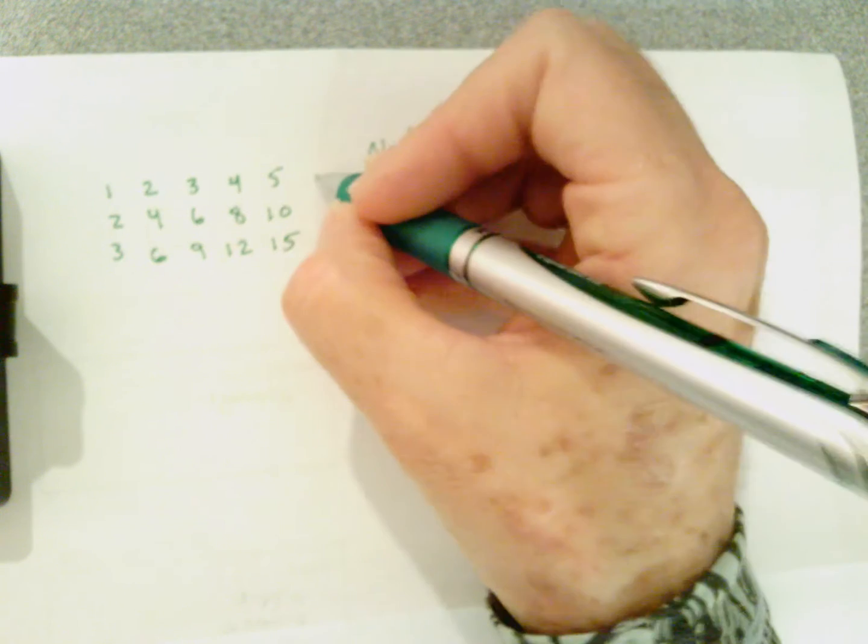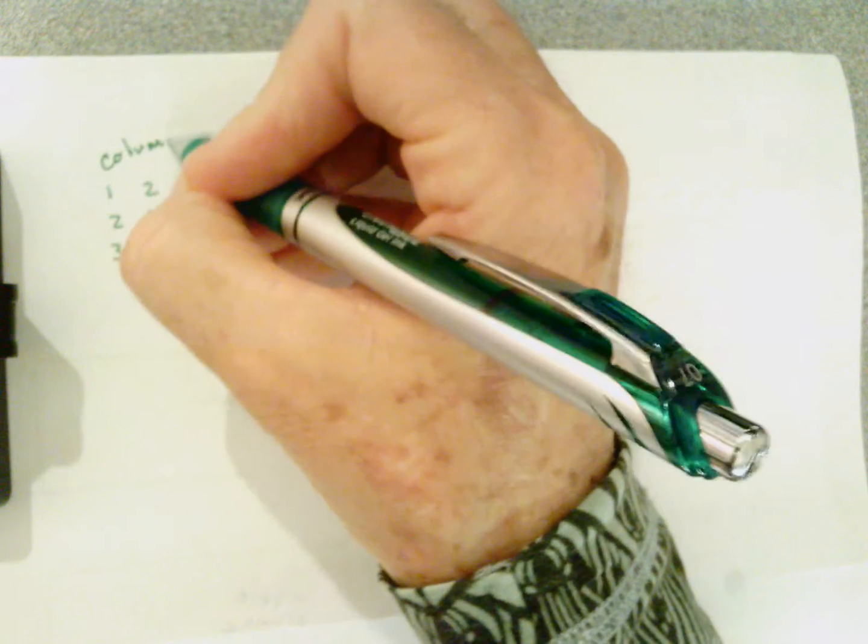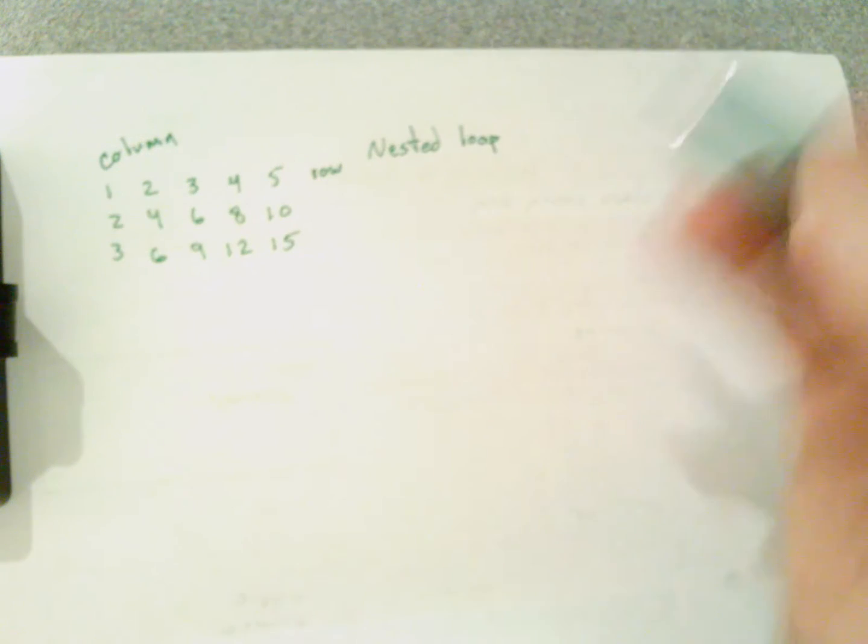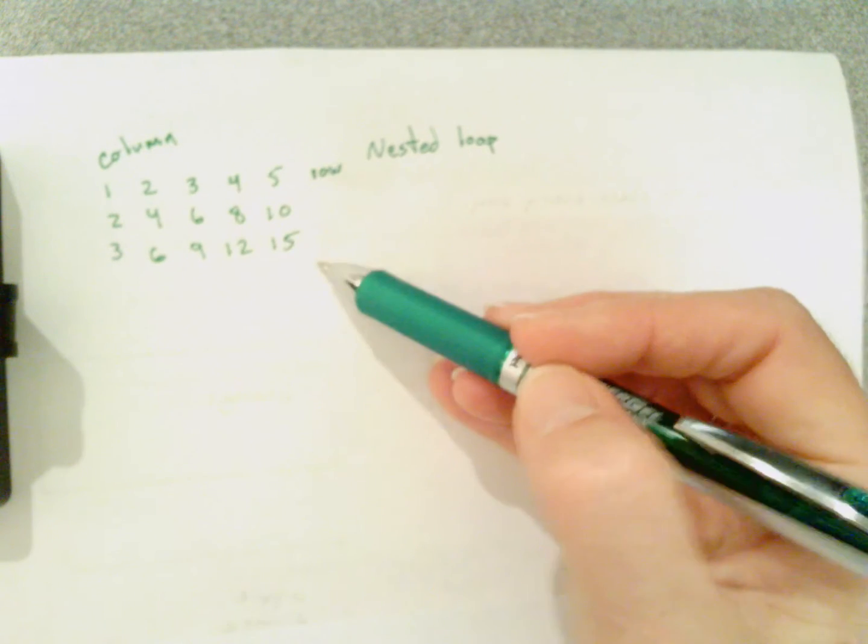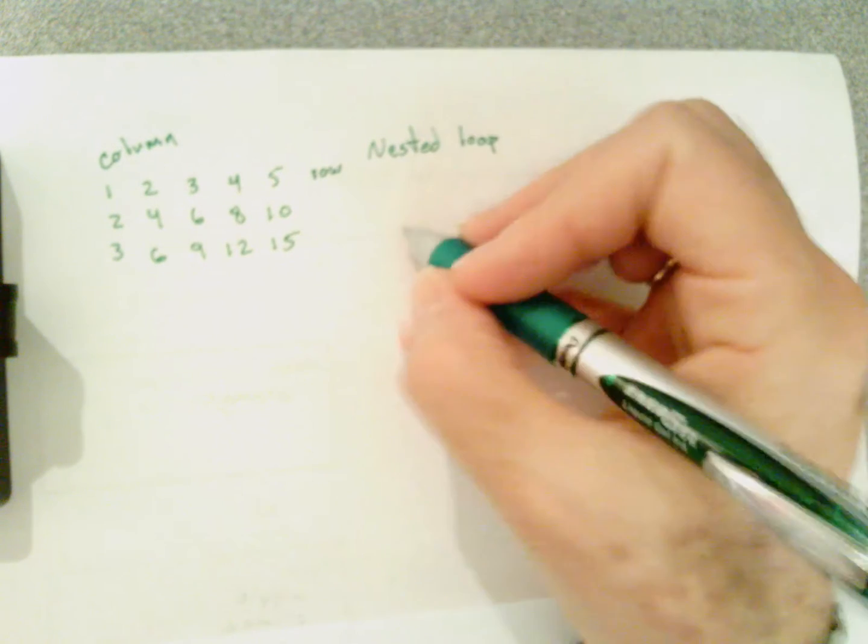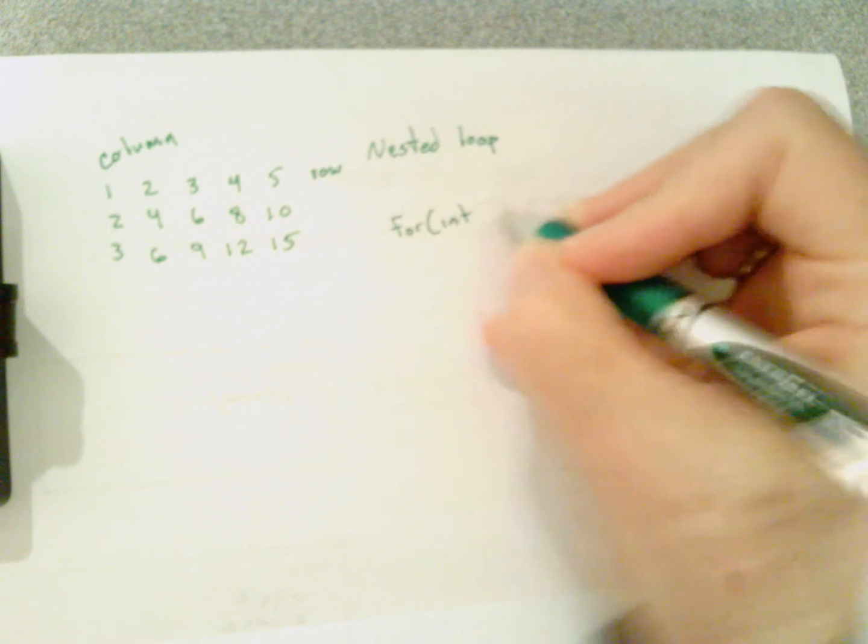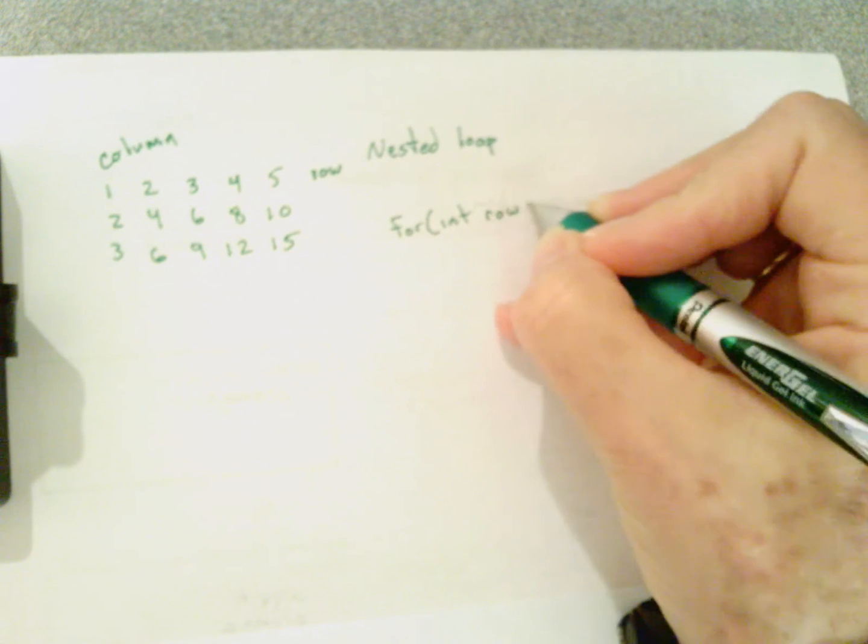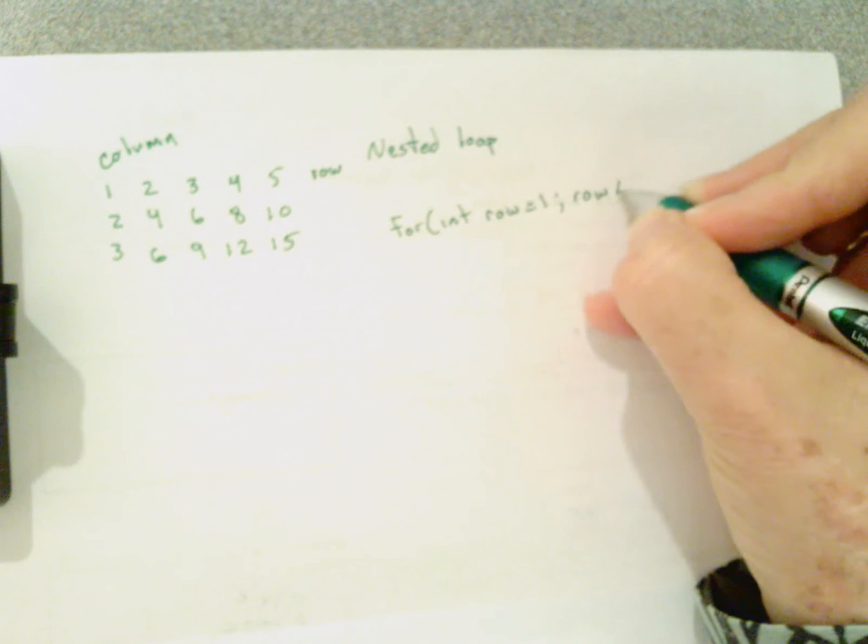We have two things here: we need to control the row and then we need to control the column. In each row there are five columns, there are three rows. So the outer loop is going to control the row, and I'm going to call that loop control variable row. Row equals one, row less than or equal to five, and then row plus plus.